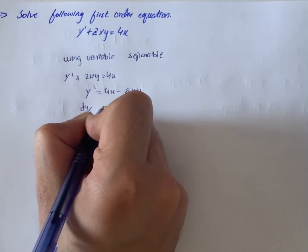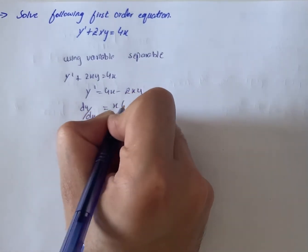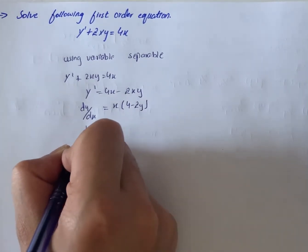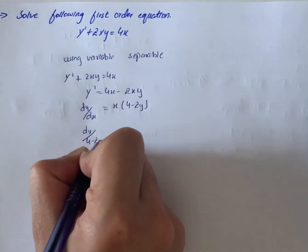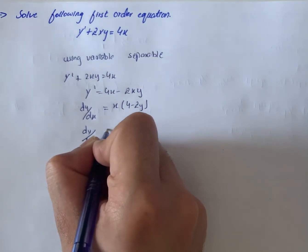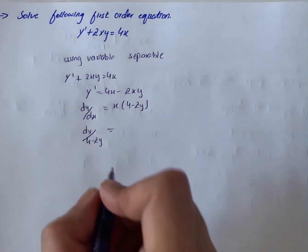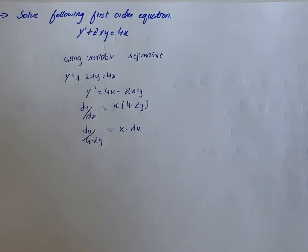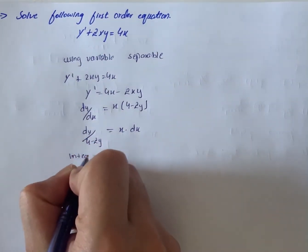dy/dx = x(4 - 2y), and then dy/(4 - 2y) = x dx. Now in step 2, we have to integrate both sides.